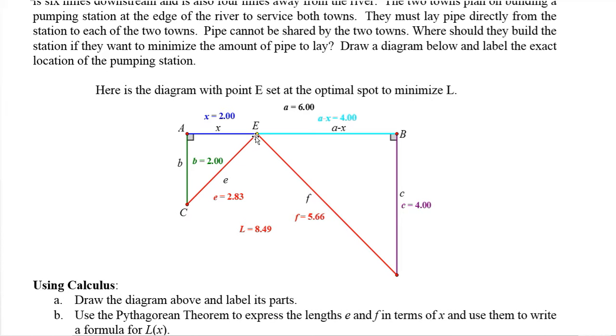The pumping station is here at E and we lay the pipe here, so we want to minimize this total amount. Now this is typically done using calculus, so let's do this with the calculus solution. What we have to first do is label some things here. This is two, this is four in miles, and then the total distance is six. We're going to let x be the distance from A to E, the distance downstream from the first town.